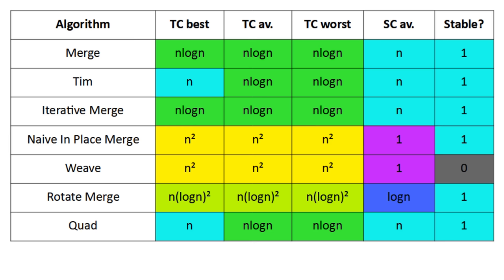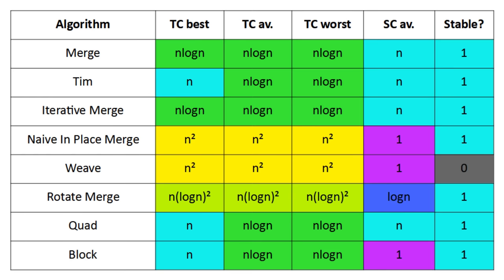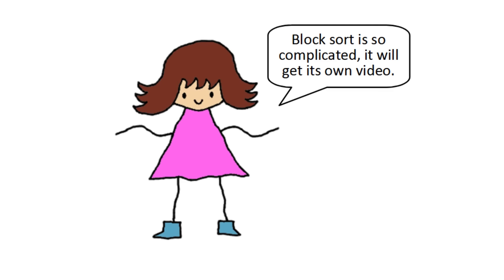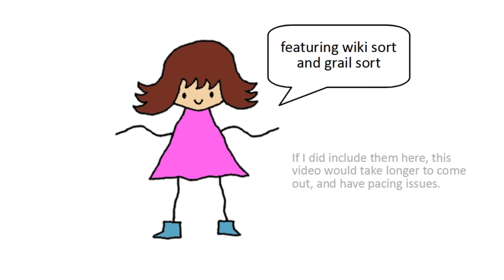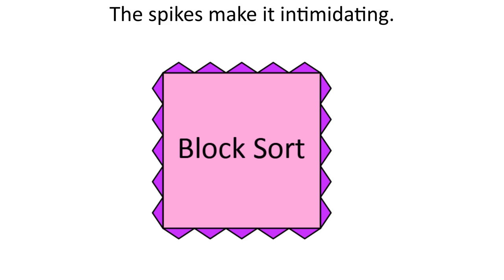Now, the algorithm that finally achieves optimal, stable, in-place merging is called Block Sort. Block Sort is, in my opinion, the most complicated sorting algorithm there is, so complicated that it deserves its own video. That video will come out soon and will also cover its variants, Wiki Sort and Graal Sort. You can think of Block Sort as the final boss of sorting algorithms. For now, I'll just go over it briefly.